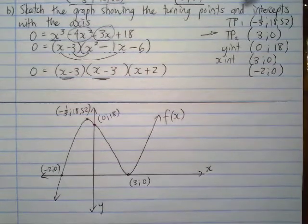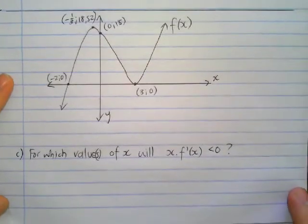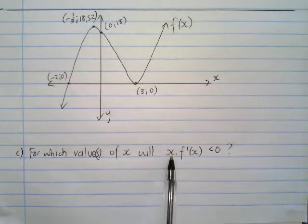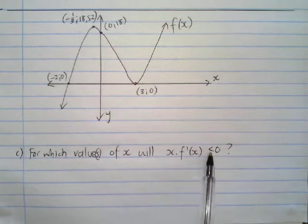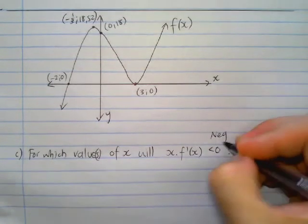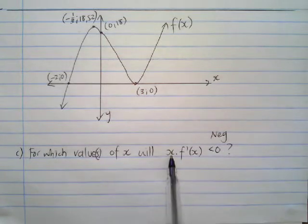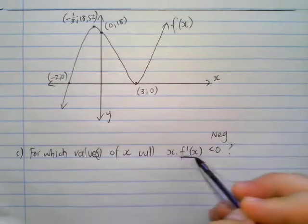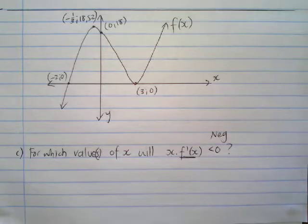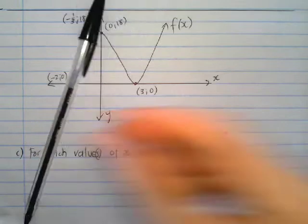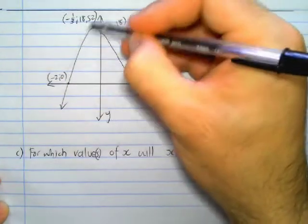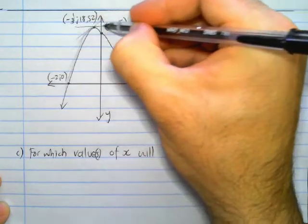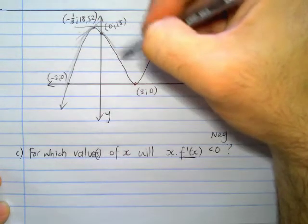Now for part c, an interpretation question based on our graph — these can be quite tricky. For which values of x will x times f′(x) be less than zero (negative)? Firstly, the first derivative tells us the gradient of the tangent to the curve. To the left of the first turning point all gradients are positive, at the turning point the gradient is zero, and between the two turning points the gradients are negative.